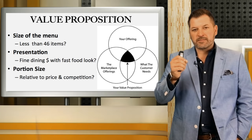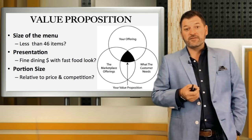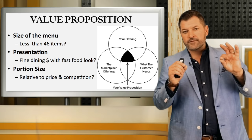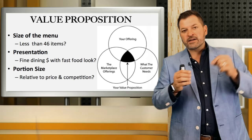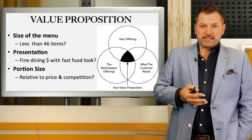That led us to believe we either needed a better fry that holds heat, a smaller portion, or at minimum get the product to the guest faster so it doesn't get cold. Our solution was to move to a slightly thicker fry with a starch coating that kept it hotter longer and was a bit bigger, giving better volume on a plate using the same ounce amount. That was a good solution for us.